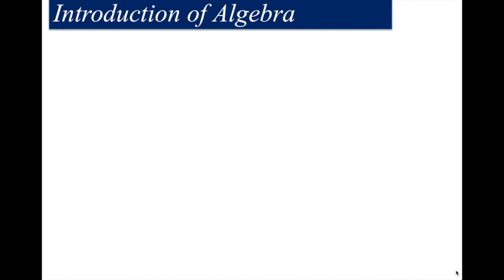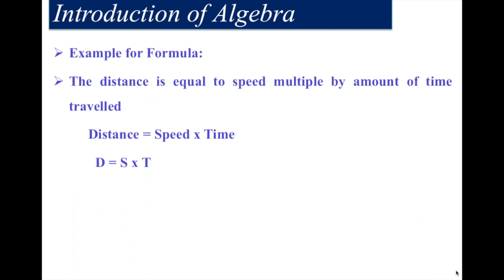Now let's look at another example for the formula. Distance is equal to speed multiplied by the amount of time traveled. Therefore this is the formula: distance equals speed into time, written as d equals s into t.